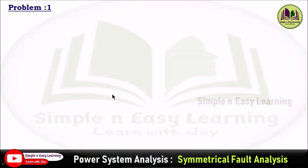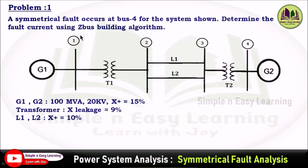In this video we are going to solve a problem in symmetrical fault analysis using the bus impedance matrix. Problem one: a symmetrical fault occurs at bus 4 for the given system. Determine the fault current using the Z-bus building algorithm. The system has 4 buses. Generator ratings: 100 MVA, 20 kV, reactance 15%. Transformer leakage reactance is 9% and line reactance is 10%.